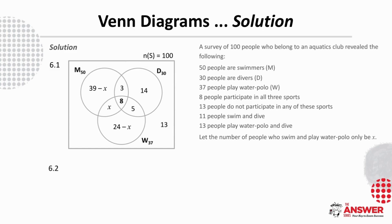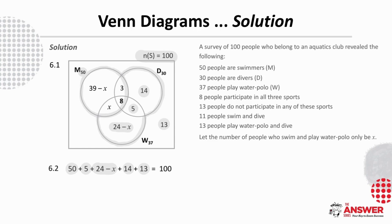Now that the Venn diagram is complete we find x's value. Since there are 100 people in the sample space, everything must add up to 100. Taking the total swimmers of 50, then 5, and 24 minus x, then 14, and the 13 — solving gives x equals 6. The number of people who swim and play water polo is 6 plus 8 which is 14.